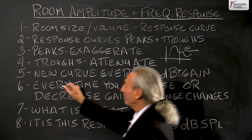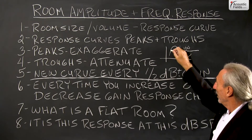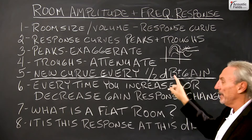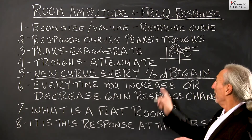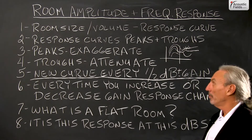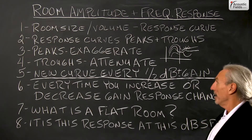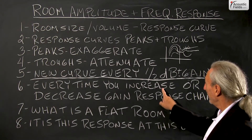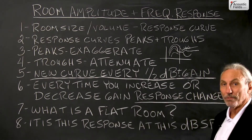We get a new curve — better or worse — with every half dB increase in our gain. When we reach for that gain knob, if the top one was our original curve that we measured before and we push that gain knob up half a dB, that curve is going to change. That's how sensitive room response is. Every time you increase or decrease the gain, you're changing the response curve of the room.